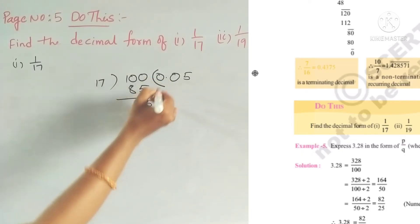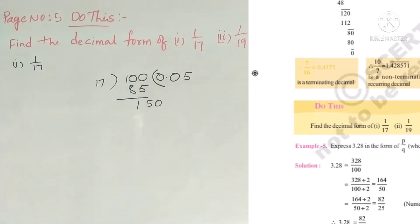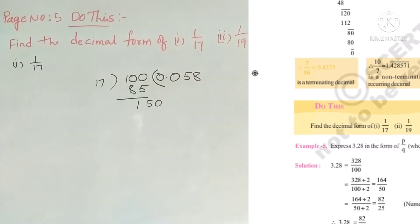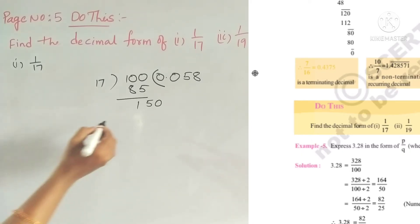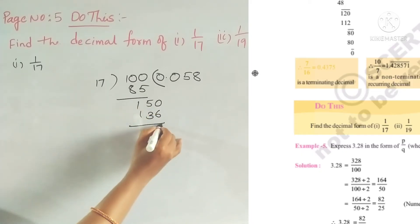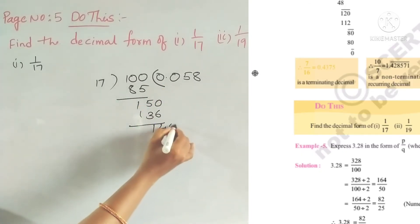Decimal point is there, so we can add 0. Now 150 divided by 17: 17 eights are 136. We subtract 136 from 150 — 10 minus 6 is 4, 4 minus 3 is 1 — so the remainder is 14. We can put 0 again.